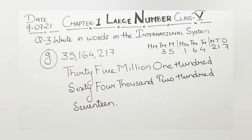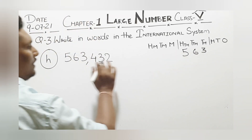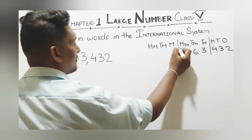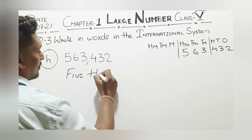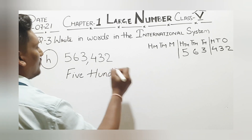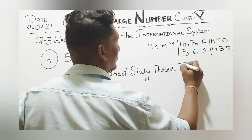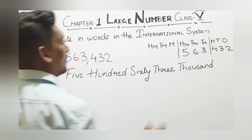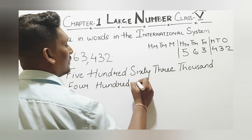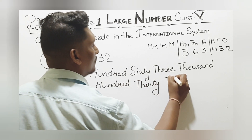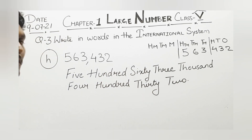Hope it is clear to you, just go through it. Now come to option number H. We have the digits: 5, 6, 3, then 4, 3, 2. Breaking it down: 563,000 plus 400 plus 100 plus 30 plus 2 — so the number is 563,432. Hope it is clear to you, just go through it.